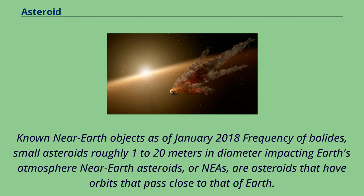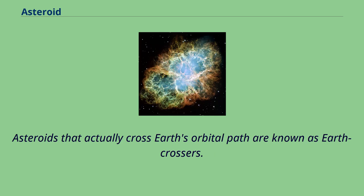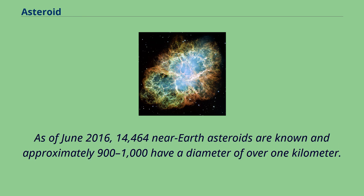Near-Earth asteroids, or NEAs, are asteroids that have orbits that pass close to that of Earth. Small asteroids roughly 1 to 20 meters in diameter impacting Earth's atmosphere are known as bolides. Asteroids that actually cross Earth's orbital path are known as Earth crossers. As of June 2016, 14,464 near-Earth asteroids are known, and approximately 900 to 1,000 have a diameter of over 1 kilometer.